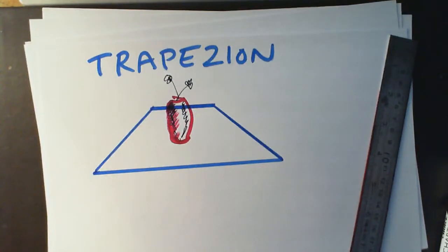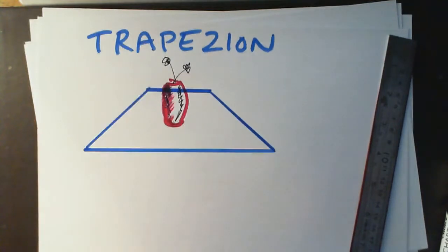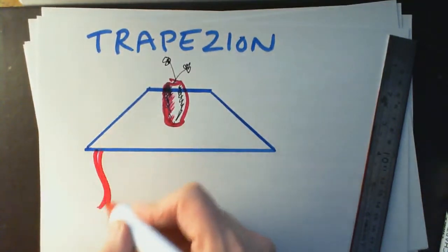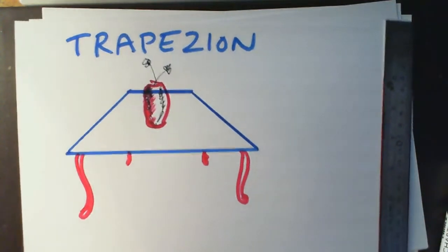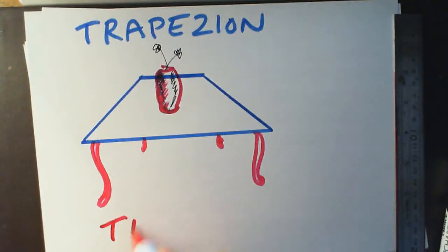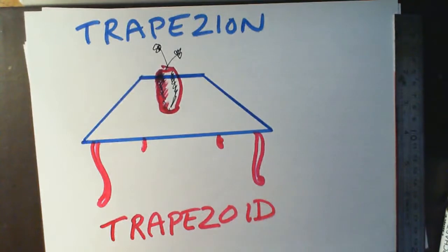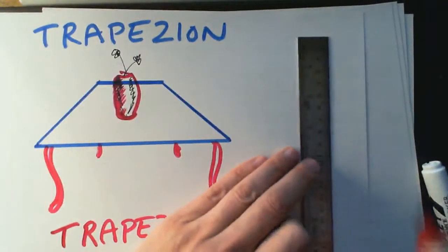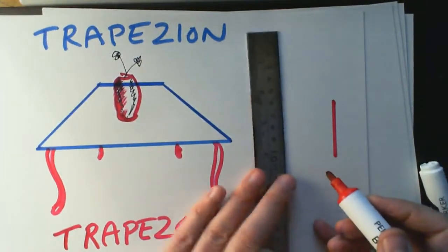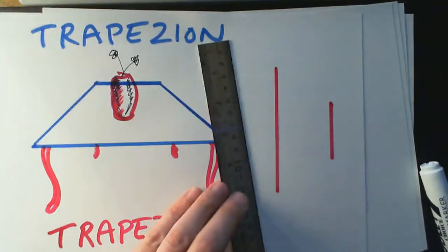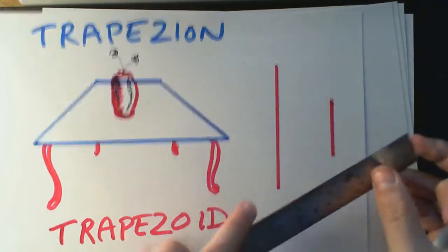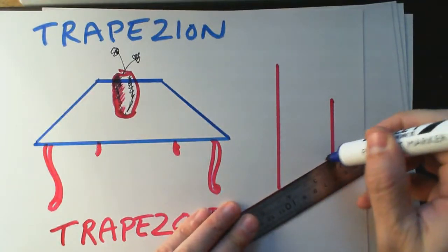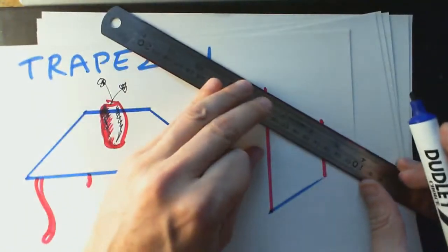In geometry, if we have a shape that looks like this fancy trapezion table which the ancient Greeks had, we call it a trapezoid — which just means 'like a trapezion'. In a trapezoid, only two sides are parallel. The other two sides are not parallel — they are converging towards one side.